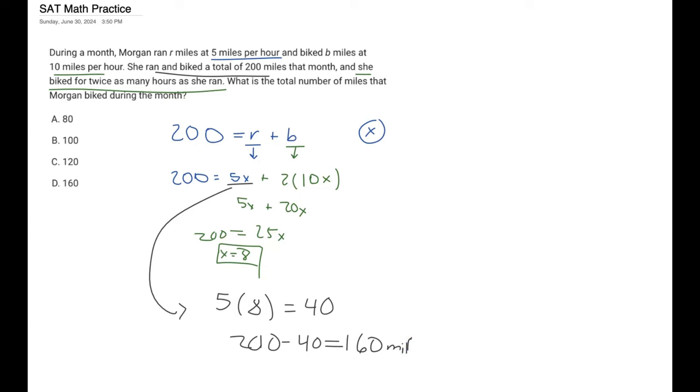And there's another way you can check. Using this equation right here, 20X. So 20 times 8, that value of 8. And guess what? That also gets us 160 miles. And so our final answer is D.